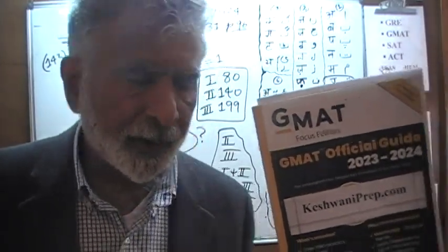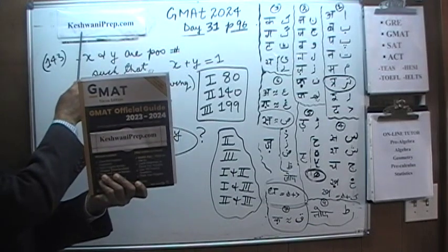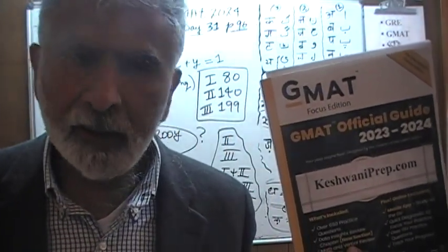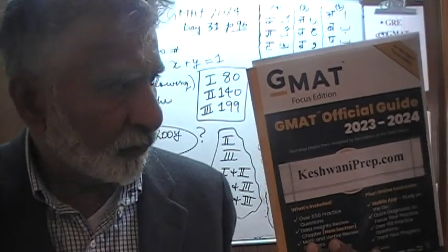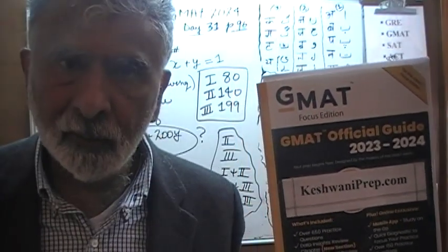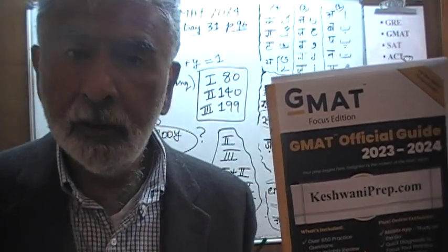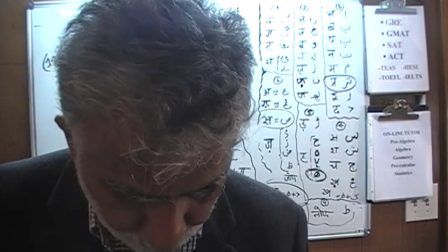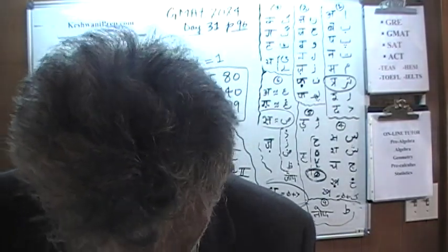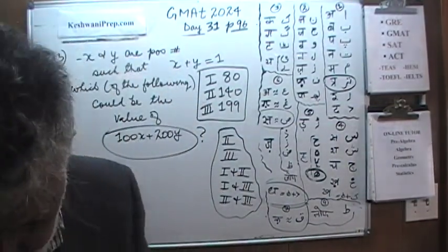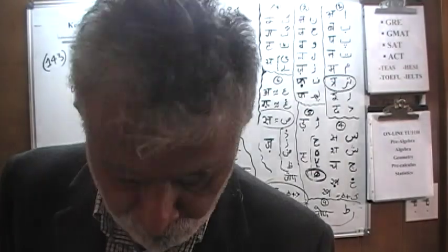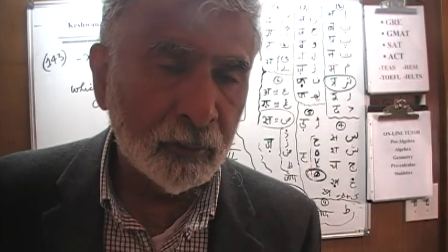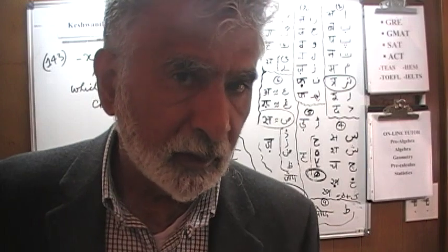Hello, my name is Keshwani — K-E-S-H-W-A-N-I. We are here because we want to prepare for GMAT. We have been solving GMAT math problems out of this book, The GMAT Official Guide 2024. If you do not own this book already, purchase one immediately. You are going to need it. Always make sure that this book is in front of you when we are working together. We are on page number 96.